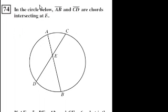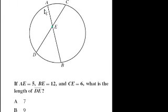Problem 74. In the circle below, AB and CD are chords intersecting at E. Fair enough. If AE equals 5, so this is 5, BE equals 12. BE equals 12. What is the value of DE? CE equals 6. What is the value of DE? Let's call that x.